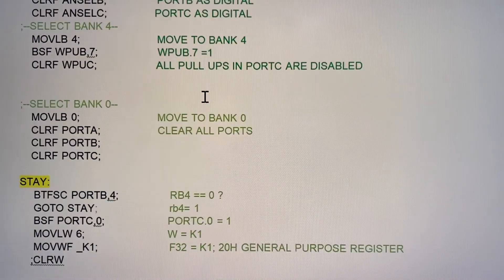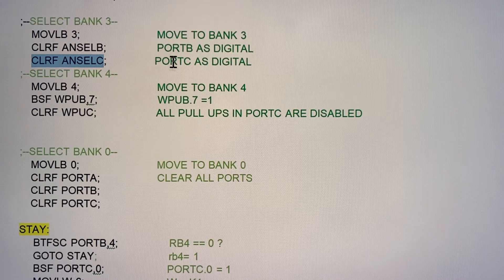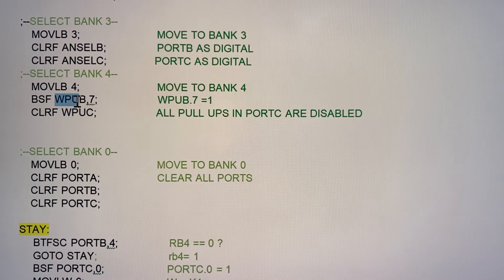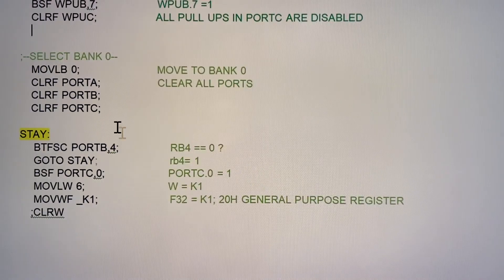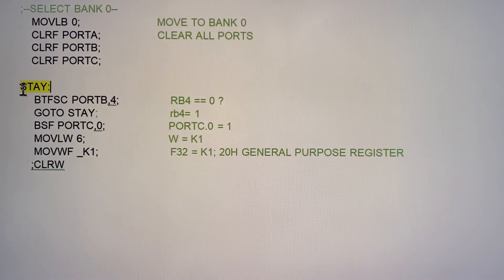In bank three we need to define our ports as digital, not analog. So we are clearing analog selection B (ANSELB) and analog selector C (ANSELC) — that way all ports B and C are digital. In bank four we have individual weak pull-ups for B — the resistors are disabled on port C. Now we move to bank zero where we have port A, port B, and port C, and we clear all those ports to make sure there is no data there.